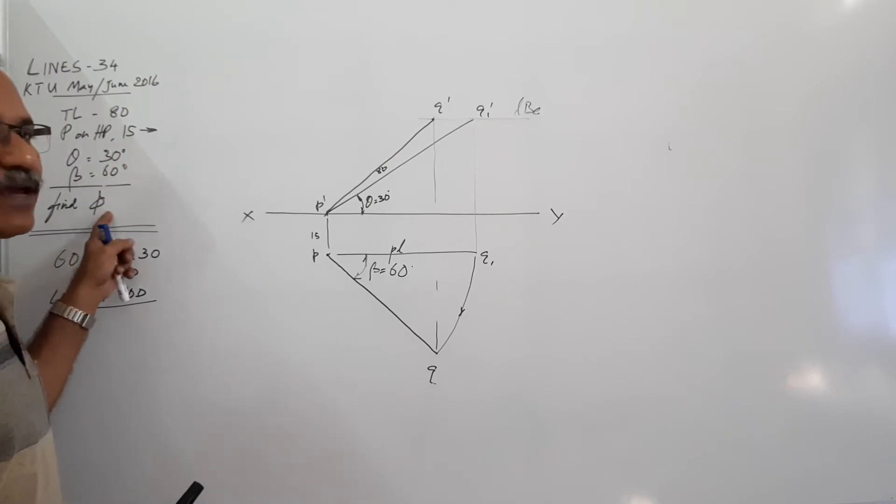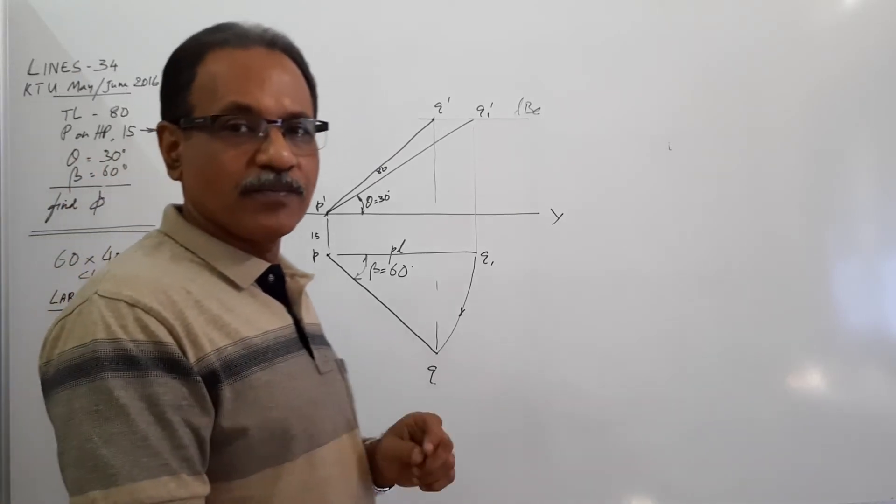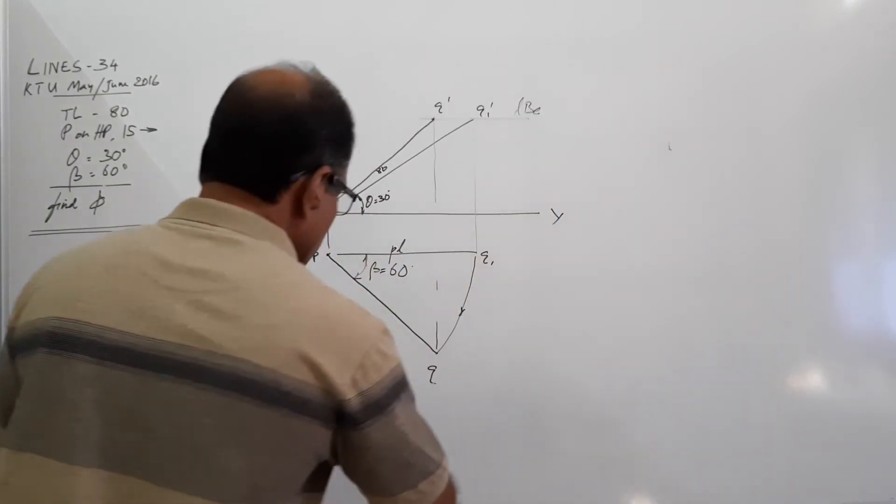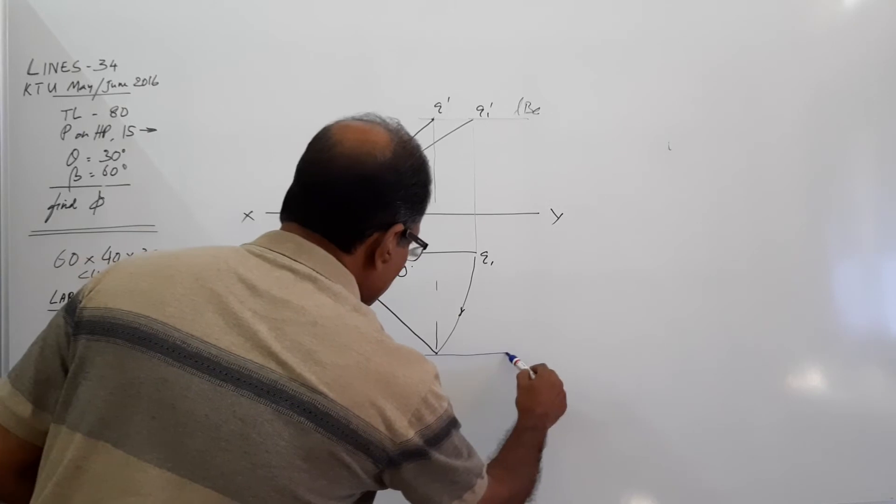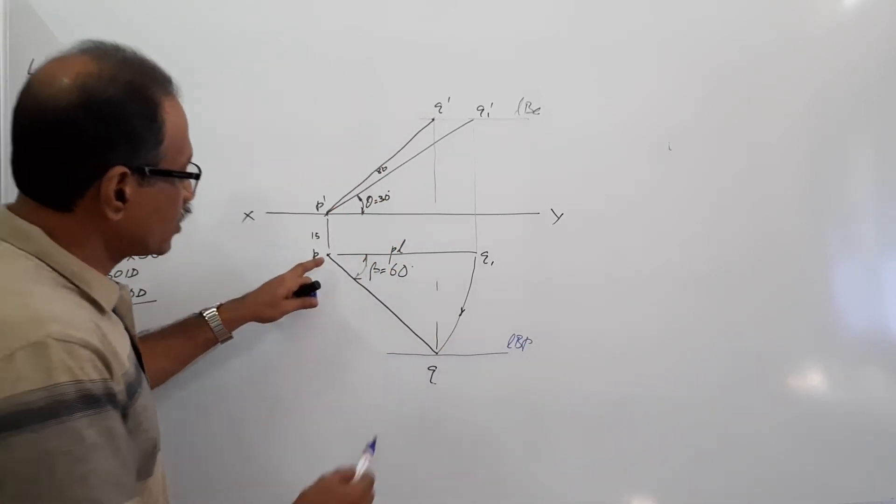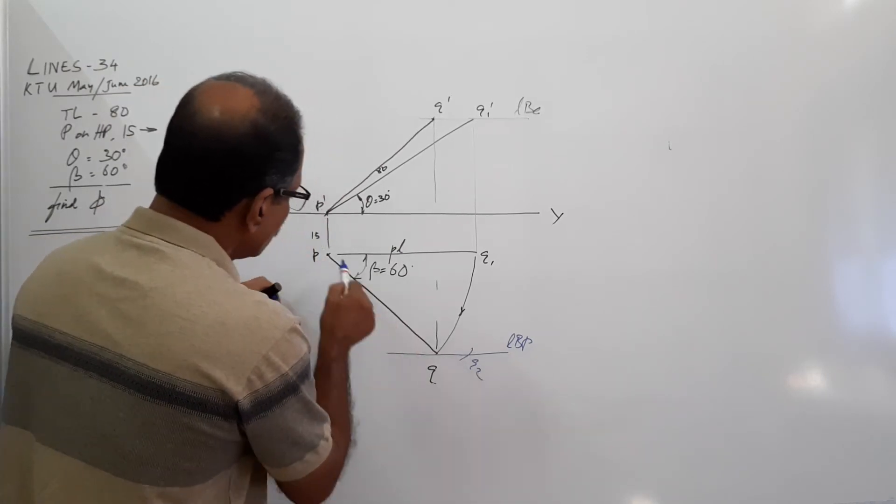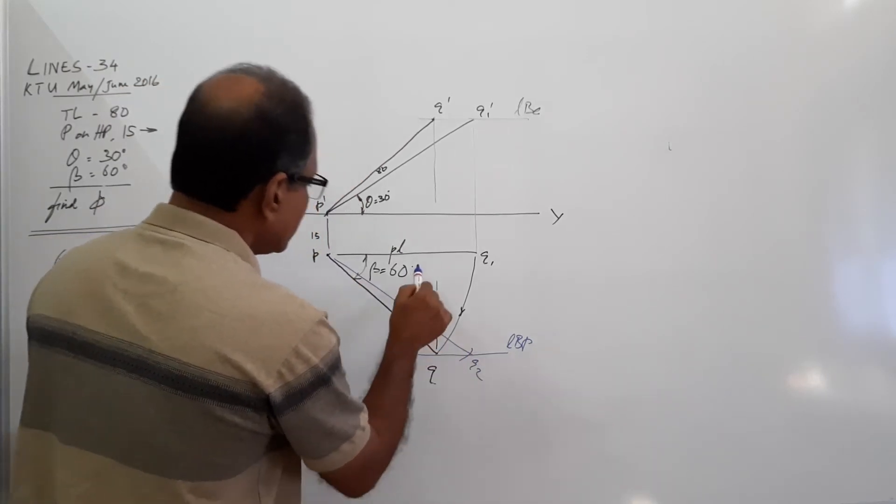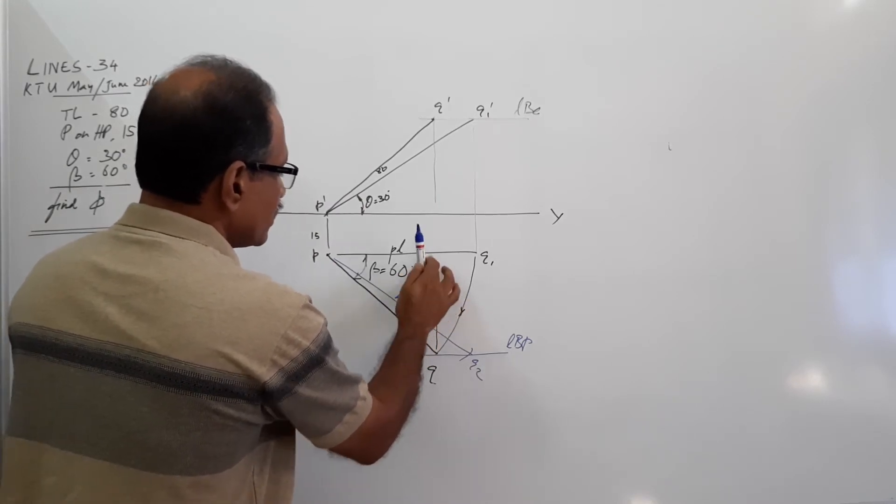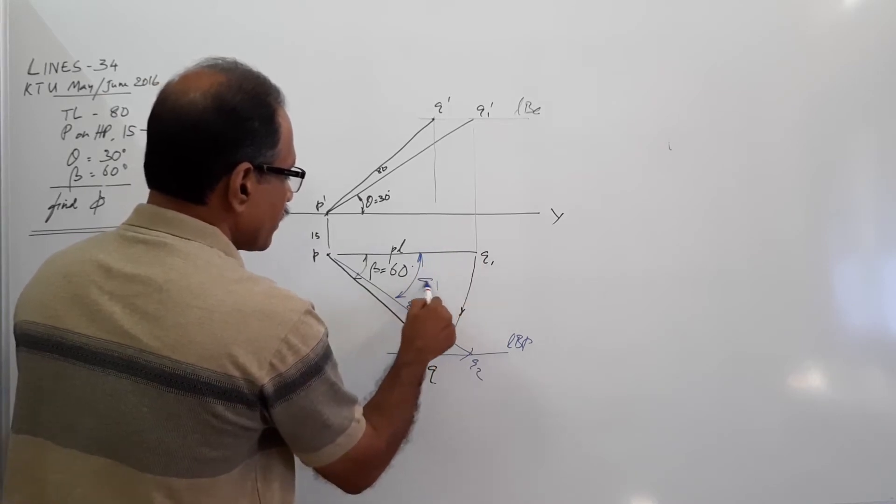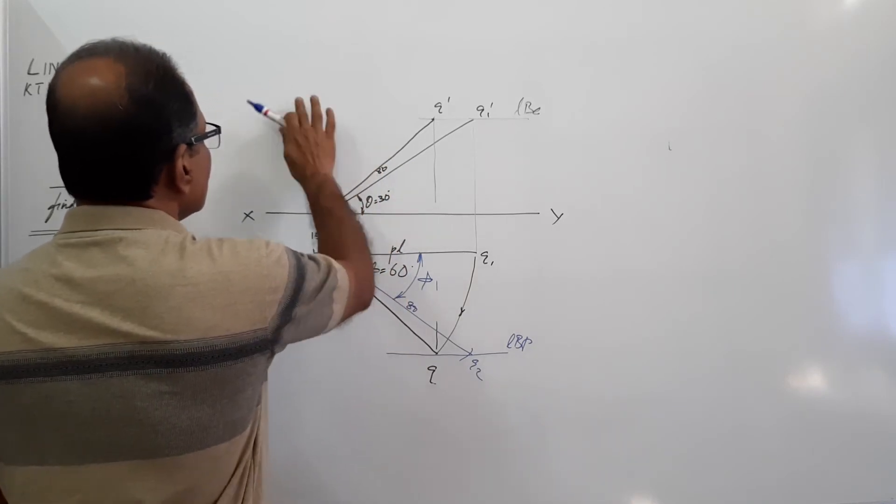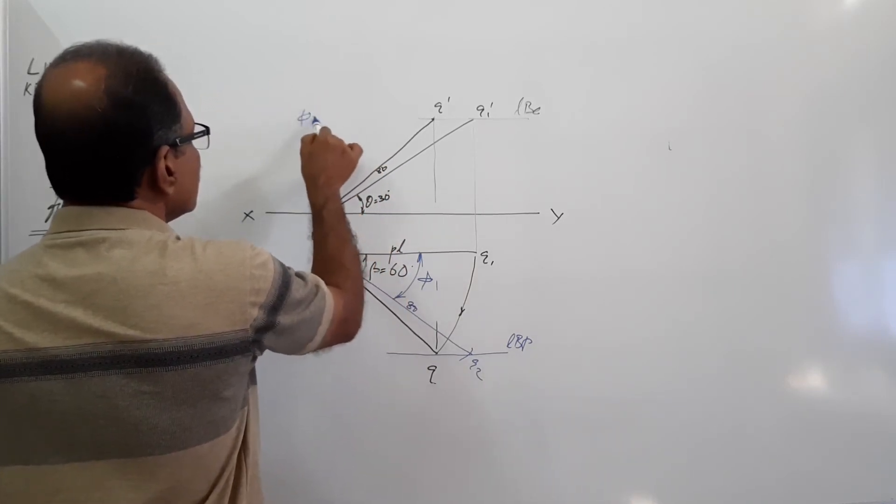You are asked to find out phi. What is phi? Phi is the inclination of a line to VP. How do you find out? Draw the locus LVP. Take true length, 80 mm in your compass and cut an arc, Q2. This is true length and this angle is called phi. So phi equals... answer.